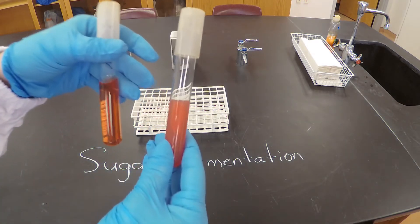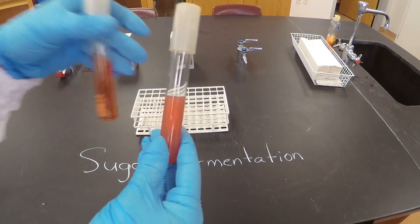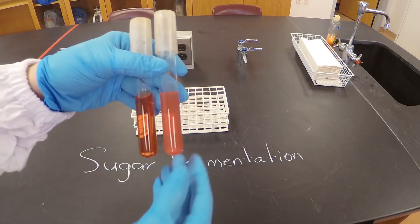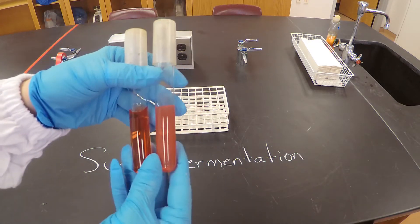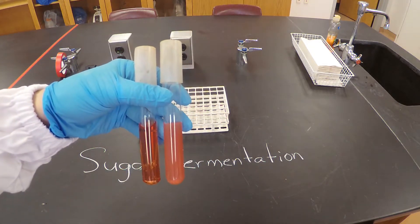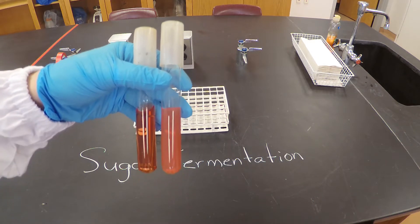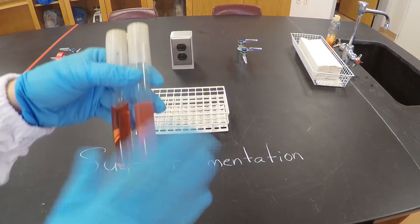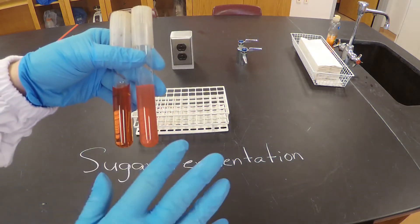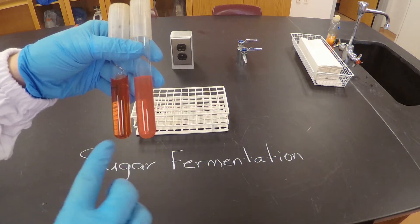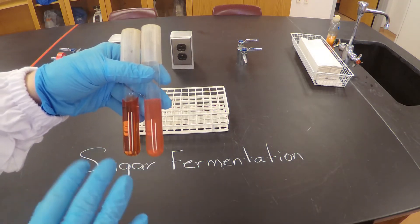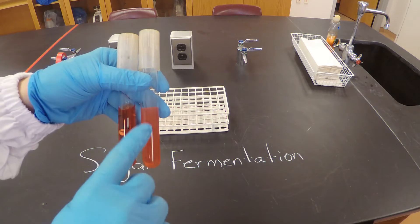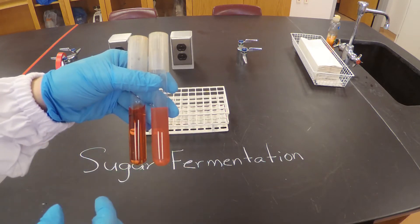The only difference between these tubes is that this one is liquid and this one, as you can see, is solid. Now, if you're asking how do you know if the bacteria were able to use the sugar — well, both tubes not only have glucose, they both have methyl red, and that's why it looks kind of red to pinkish color.